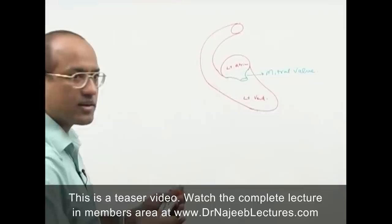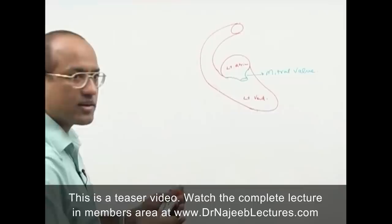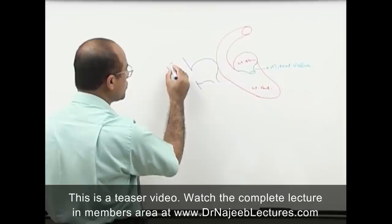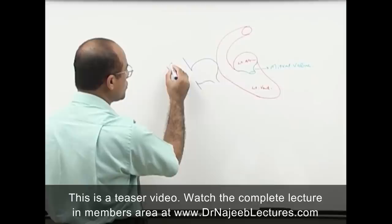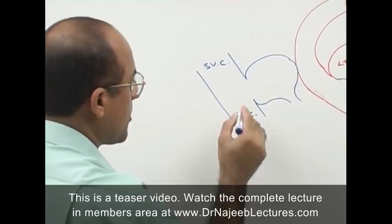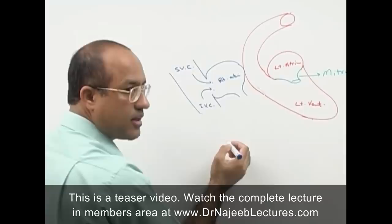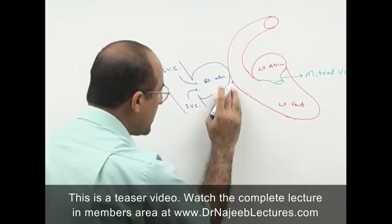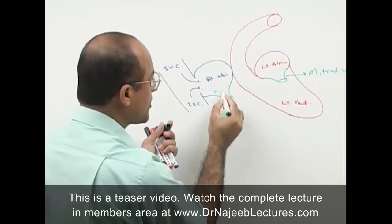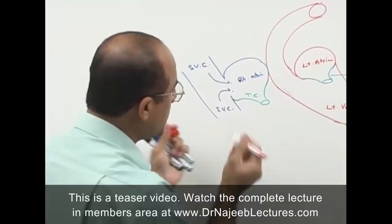On the right side of the heart, blood is coming from the body through the superior vena cava and inferior vena cava — the venous blood — coming to the right atrium. From the right atrium, it passes through the tricuspid valve and goes to the right ventricle.